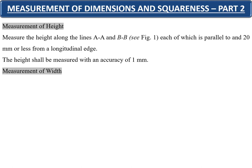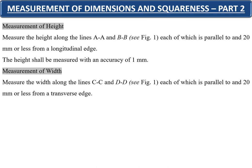Similarly, measurement of width will be along the line CC and DD — one at the bottom and the other at the top as shown in the photograph — each of which is parallel to and 20 millimeters or less from the transverse edges. The width shall be measured to an accuracy of 1 millimeter.